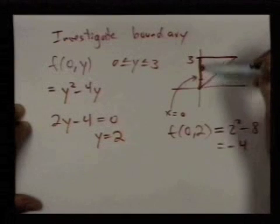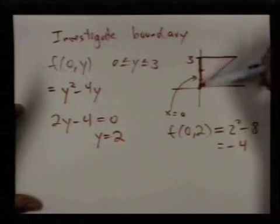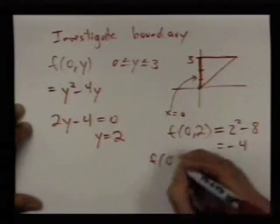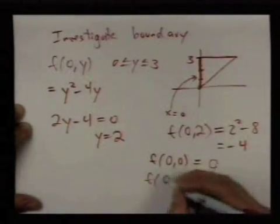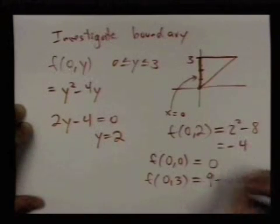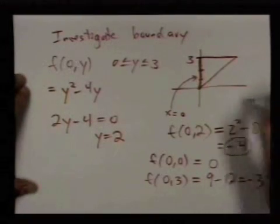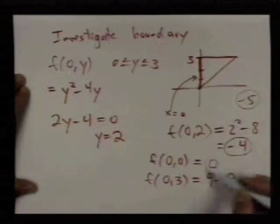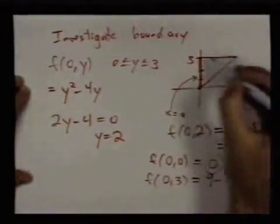Trying to find the absolute max and min, we know if it occurs inside it's at (0,2), but it could also occur at endpoints. So f(0,0)=0 and f(0,3)=9-12=-3. Here are the values to keep track of: we already had -5 from before, -4, 0, and -3. Now we have two more boundary pieces to investigate.